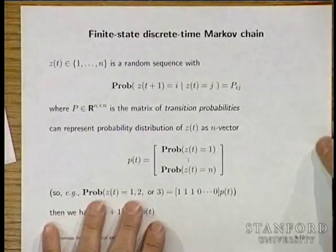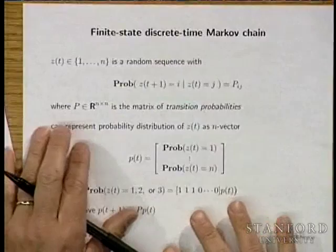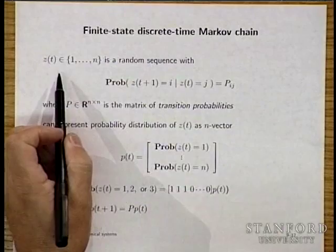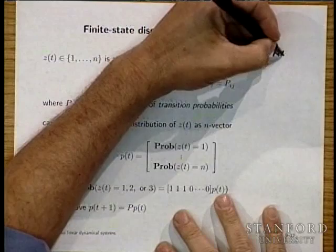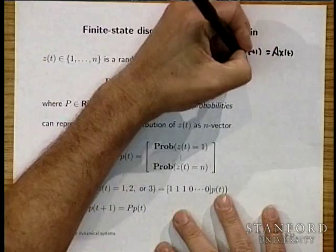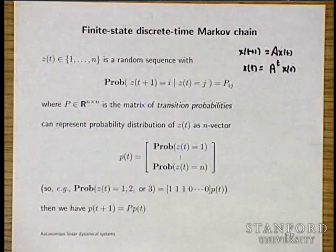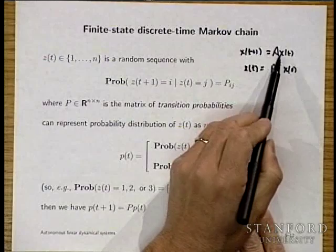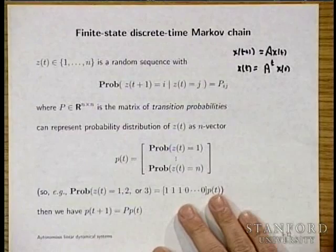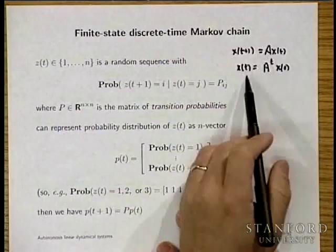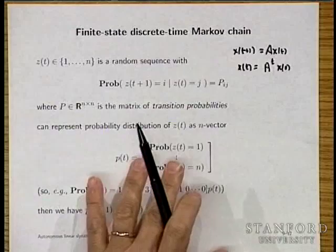The next example is a discrete-time linear dynamical system, which is just an iteration: x(t+1) equals A times x(t). The general solution is simply A to the t times x(0) — even valid at t=0 since a matrix to the zeroth power is the identity. An example of this is a discrete-time Markov chain.